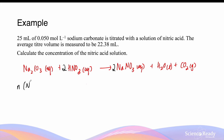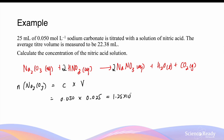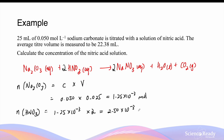The number of moles of sodium carbonate can be calculated by multiplying the concentration of the standard solution by the aliquot volume used for each titration trial. The concentration is 0.05 mol per litre times by the volume, which is 0.025 litres. This gives 1.25 × 10⁻³ moles. The moles of nitric acid added from the burette will then be equal to 1.25 × 10⁻³ times 2, which is 2.5 × 10⁻³ moles.